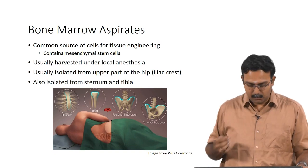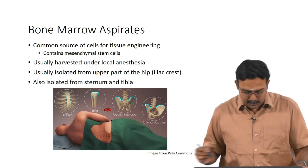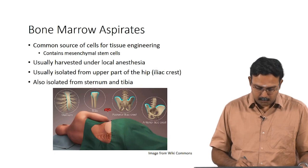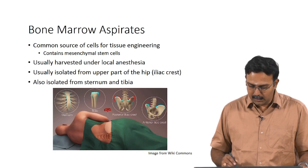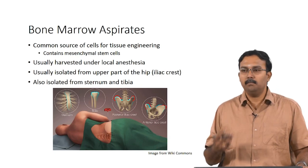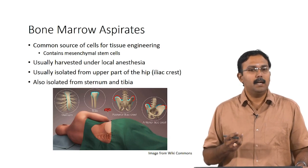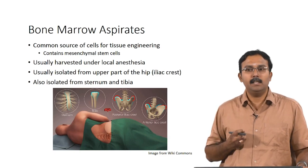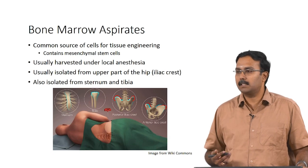The iliac crest is the hip bone region where the bone contains the bone marrow, and you can actually get a bone marrow aspirate from which you can isolate mesenchymal stem cells. These can also be isolated from the sternum — which is what connects the rib cage — and from the tibia, which is a bone in the leg.